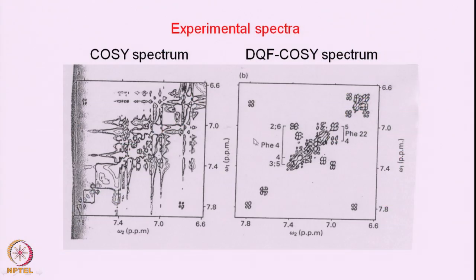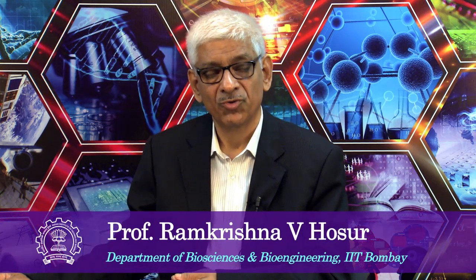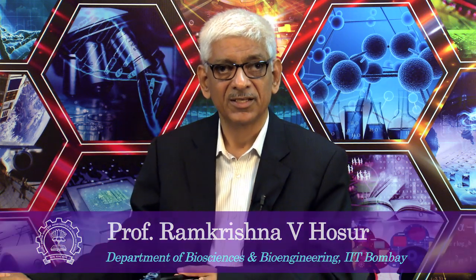We chose here a double quantum signal and converted it into observable single quantum by applying the third pulse — a slightly modified pulse sequence. This is a very general phenomenon: one can do this for various kinds of filters and select different pathways. For example, to select Z-magnetization you use a different kind of phase cycling — changing phases x, y, minus-x, minus-y and using different addition/subtraction combinations in the receiver. This illustrates the general strategy of selecting coherence transfer pathways in two-dimensional spectra.